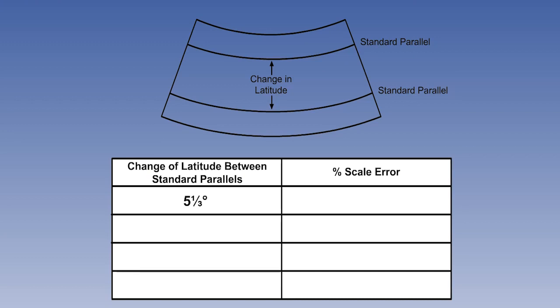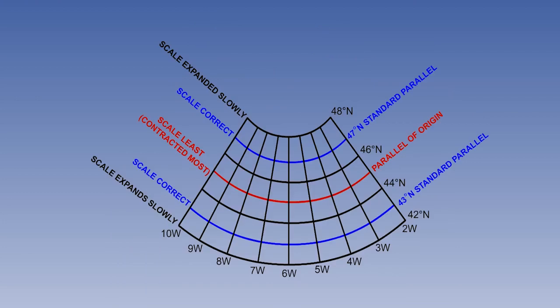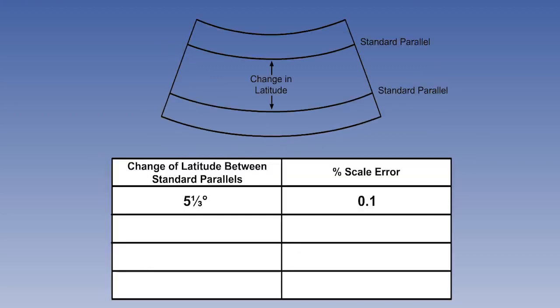We will start with a value of 5 and 1/3 degrees between the northern and the southern standard parallels. If the chart is constructed according to the 1/6th rule, 5 and 1/3 degrees between the standard parallels gives us a maximum scale distortion, even at the worst point, of only 1/10th of 1%.